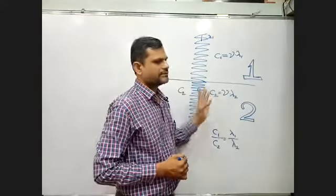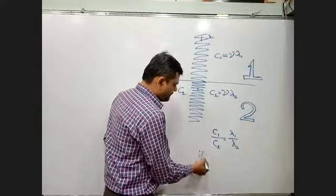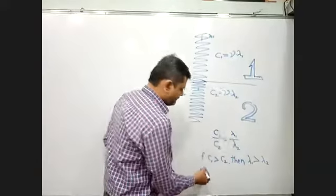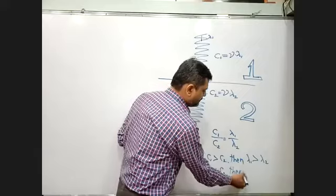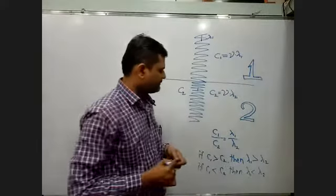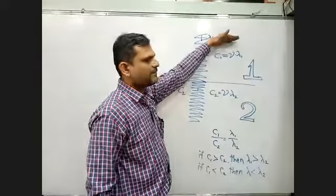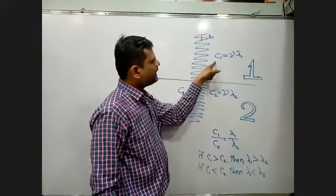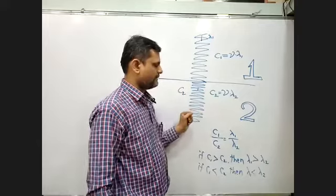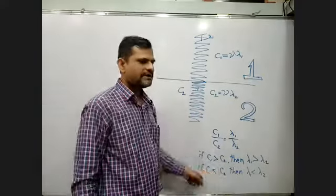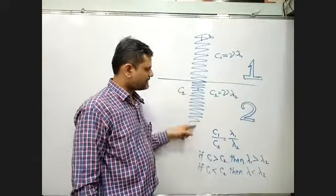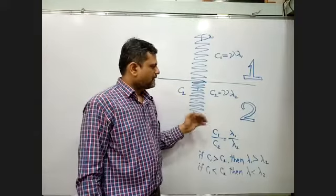Since ν cancels, we get c1/c2 = λ1/λ2. If c1 > c2 (rare to denser medium), then λ1 > λ2 — the wavelength decreases. If c1 < c2 (denser to rare medium), then λ1 < λ2 — the wavelength increases. So when light travels from rare to denser medium, both speed and wavelength decrease while frequency remains constant.